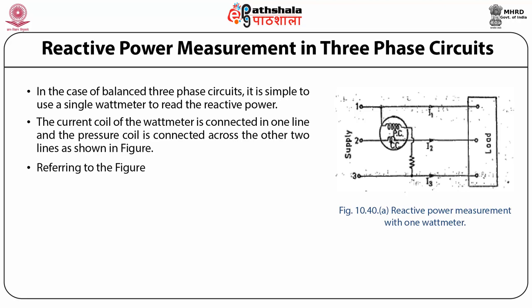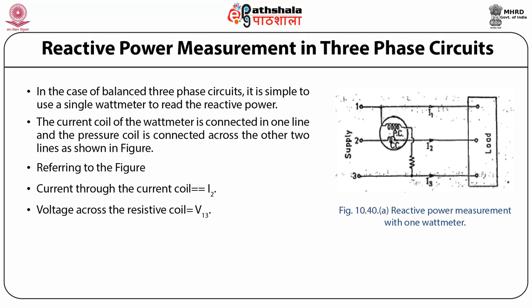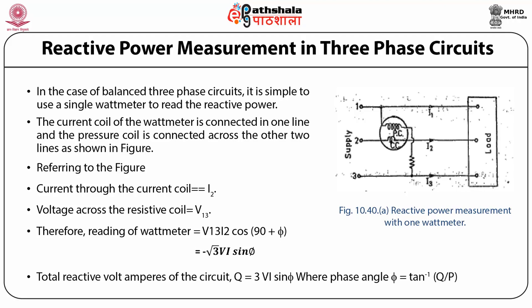In the case of balanced three-phase circuits, it is simple to use a single wattmeter to read reactive power. The current coil of the wattmeter is connected in one line and the pressure coil is connected across the other two lines. The current through the coil equals I2 and the voltage across the pressure coil equals V13. Therefore the reading of the wattmeter equals V13 × I2 × cos(90° + φ), which equals −√3 Vi sin φ. The total reactive power of the circuit is then determined from this reading.